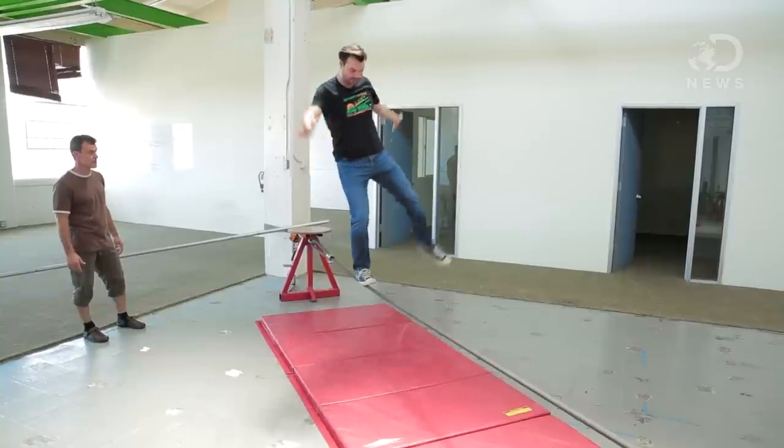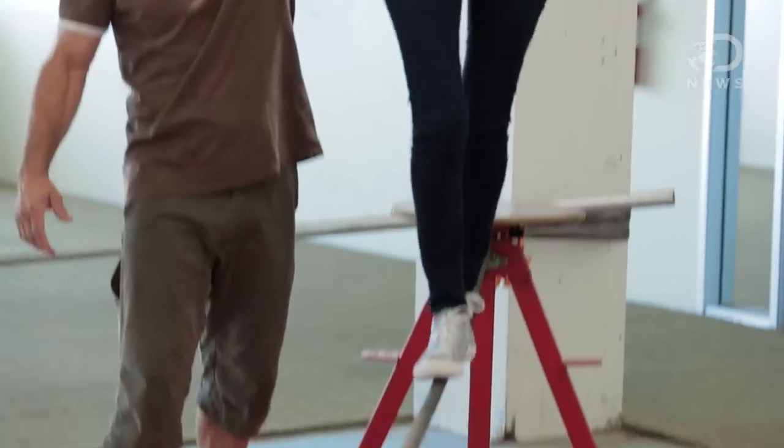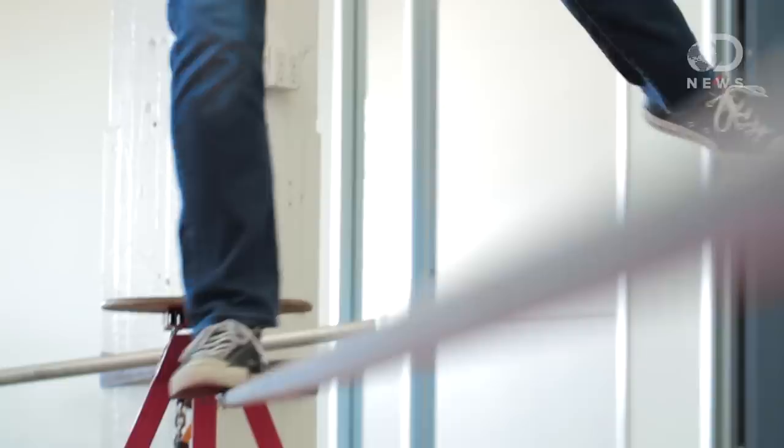This is also why it's easier to walk on a balance beam with your arms out. Your arms are lowering your center of gravity and spreading your mass out to increase your rotational inertia. This creates time for you to make adjustments before falling.